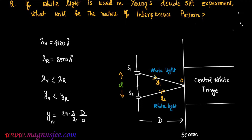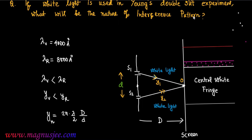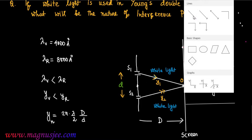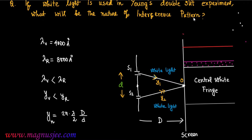With respect to the central white fringe, the nearest fringe will be the violet fringe on both sides. Colored fringes will be formed on both sides of the central white fringe. The nearest fringe will be violet and the red fringe will be formed at the greatest distance from the central white fringe.